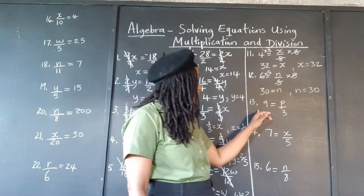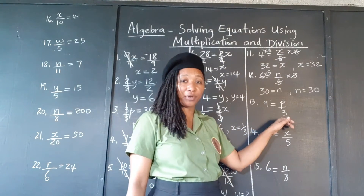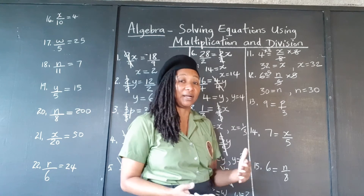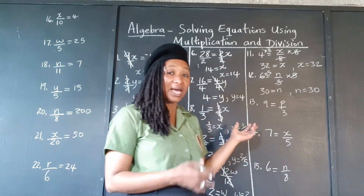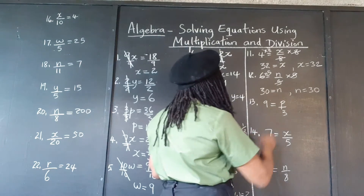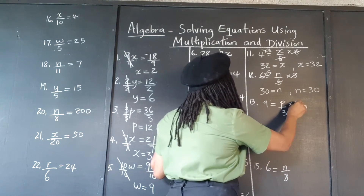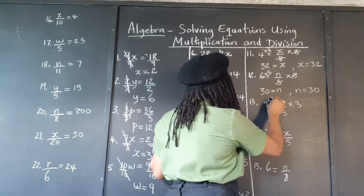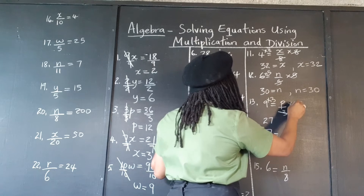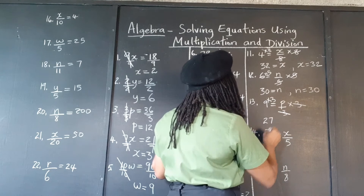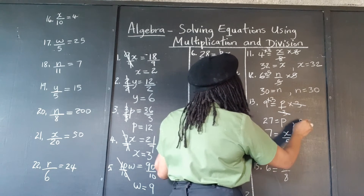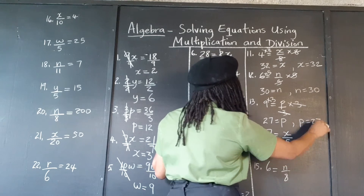9 is equal to which number divided by 3? Which number, when you take it and divide it up into 3 equal parts, gives 9 in each part? We're going to multiply by 3 on both sides. 9 times 3 is 27. The 3s cancel out on the right. So 27 equals P, or P is equal to 27.